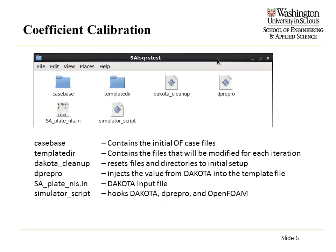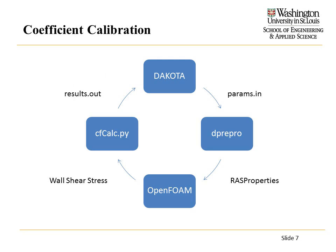In our case, the template directory contains the RAS properties file, and dprepro will use that template to modify the file for use with OpenFOAM. There's also a DAKOTA cleanup script to reset your case. This is the actual input file for DAKOTA, and the simulator script controls the running of dprepro, OpenFOAM, and the Python script.